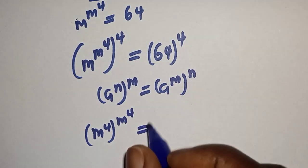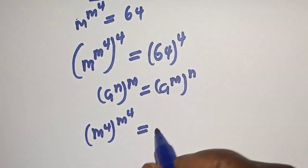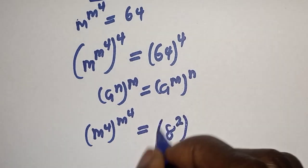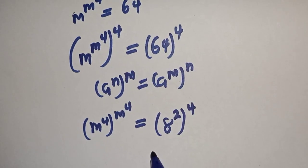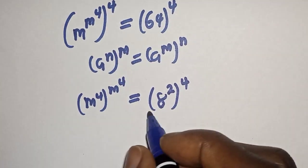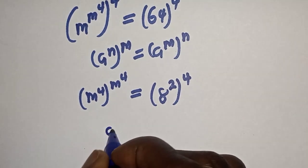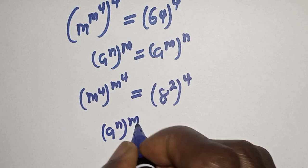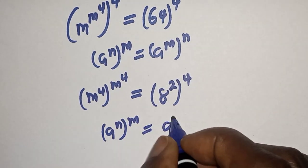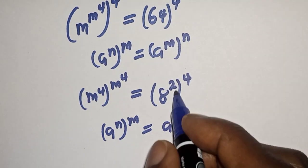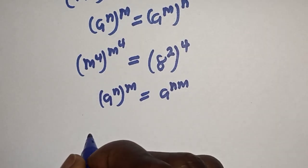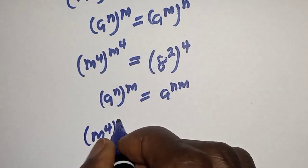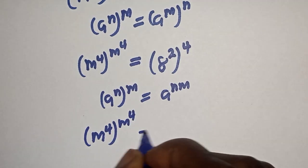This is equal to 64, which can be written as 8 squared to the power of 4. Also take note that if you have a raised to power n, to the power of m, it is equal to a raised to power n times m.